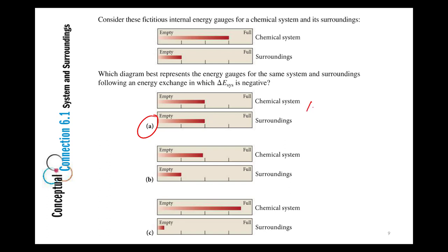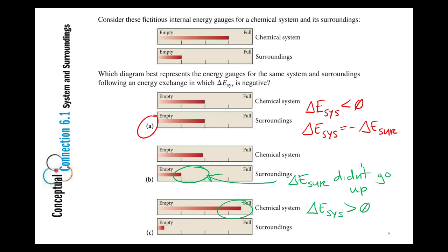All right, yes. So this one was good because delta E for the system was negative. And change in energy of the system was equal to the change in internal energy of the surroundings, but opposite in sign. One's gaining, one's losing. Here, the surroundings didn't gain. Change in internal energy of the surroundings didn't go up. And then here, delta E for the system was positive. Looks like the surroundings lost energy, so energy was conserved, but it just was going in the wrong direction for what we stated.